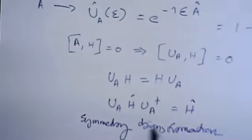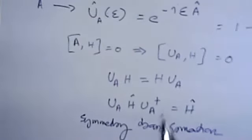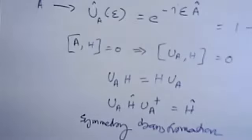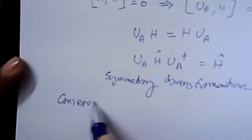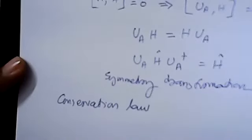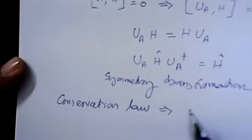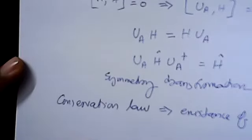So what is this? On the left side, it is a unitary transformation. This is a symmetry transformation. If you do a unitary transformation for the Hamiltonian, the Hamiltonian remains the same. This equation shows that under a unitary transformation, H remains the same. U is generated by A, where A is a constant of motion. Such transformations we call symmetry transformations.